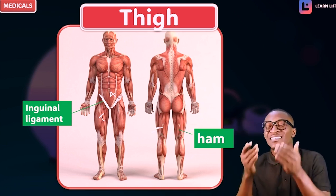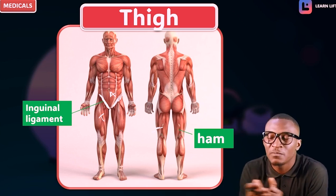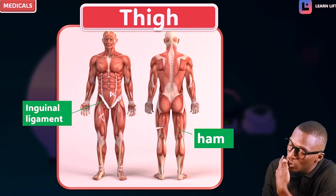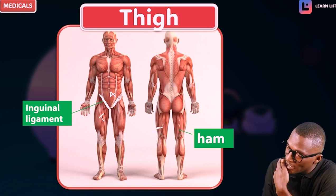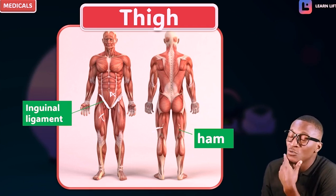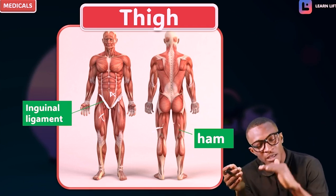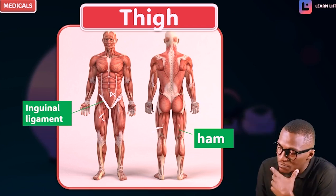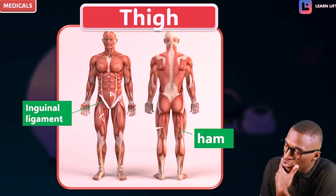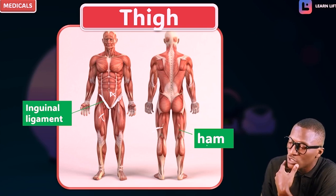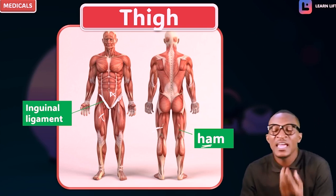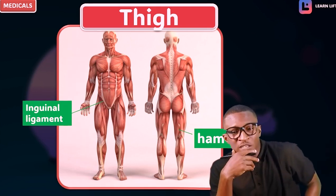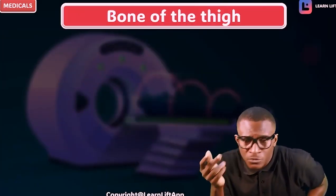Everybody, what is the posterior aspect of the thigh called? The posterior aspect — or more specifically the inferior part of the posterior aspect of the thigh, just before the knee joint — this posterior aspect of the thigh is called the ham. And the muscles there are called the hamstring muscles.